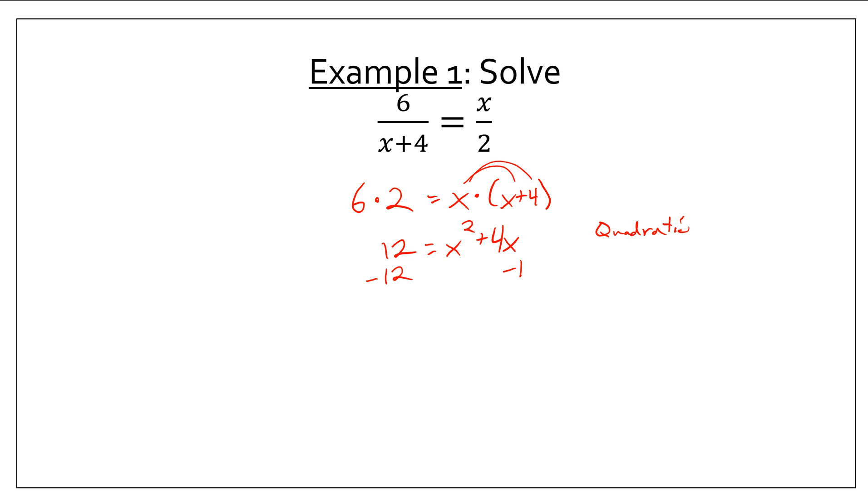Either way, let's subtract 12 from both sides to get the 0. And now that I see what quadratic I'm dealing with, I can definitely factor. This factors to x plus 6 times x minus 2. In other words, x is going to equal negative 6 and positive 2.